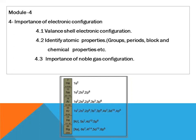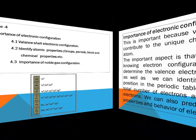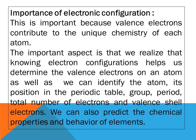Third, we discuss the importance of noble gas configuration. Electronic configuration is important because valence electrons contribute the unique chemistry of each element. Knowing the electron configuration helps us determine the valence electrons of an atom, identify its position in the periodic table — group, period, total number of electrons — and predict its chemical properties and behavior.